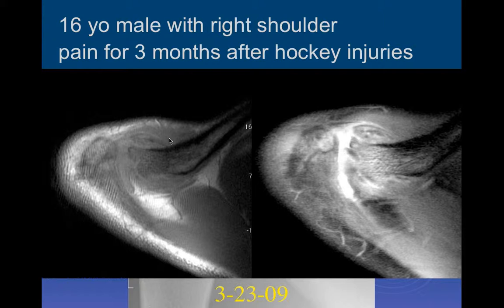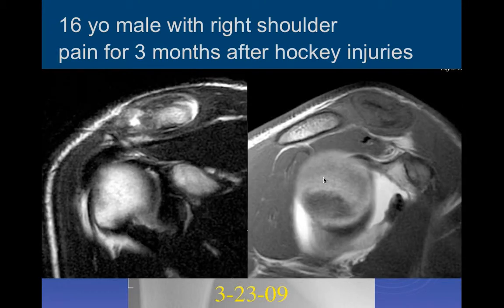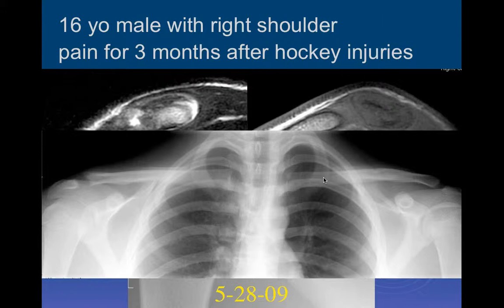On axial MRI views of the shoulder, there is a lot of signal abnormality in the distal clavicle. The clavicle looks foreshortened, and there's widening of the joint space with edema. The differential after an injury includes bony resorption — the distal clavicle looks so irregular that I'm considering osteolysis. On the left non-injured side, you can see a nice smooth normal distal clavicle, while on the right you can see where it's been resorbed with joint space widening.